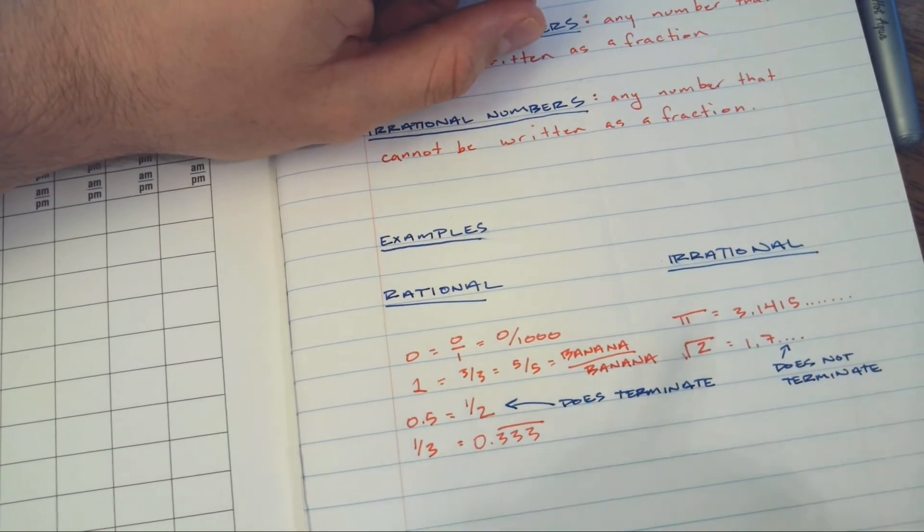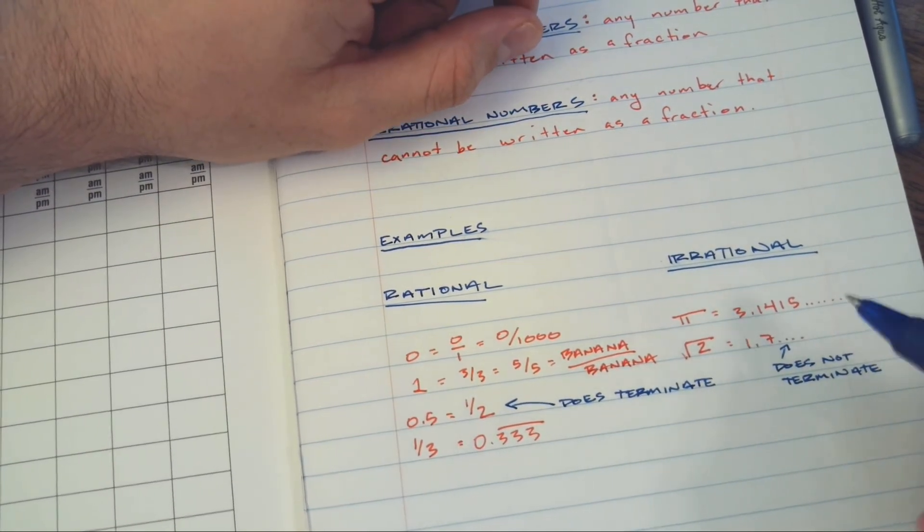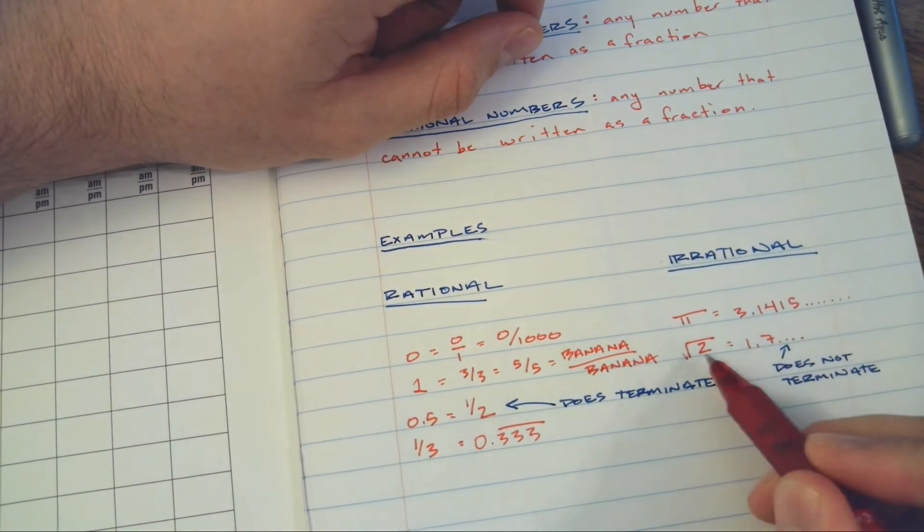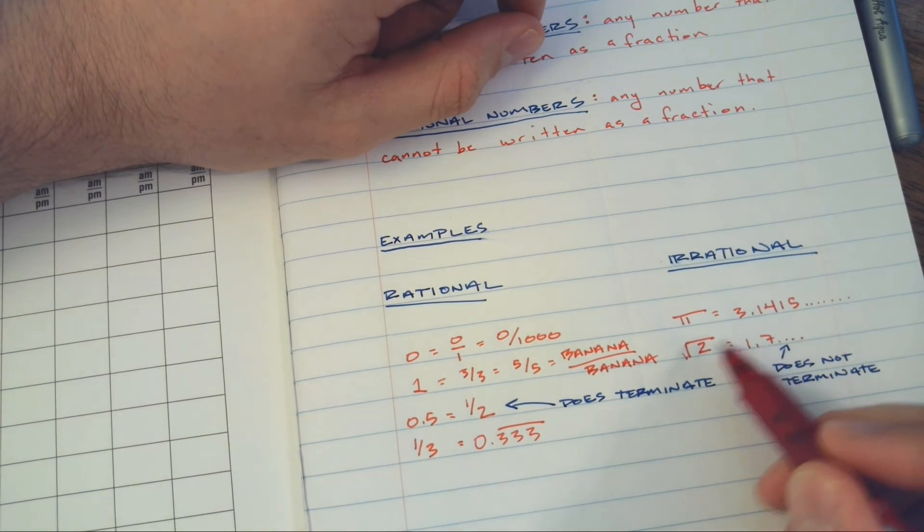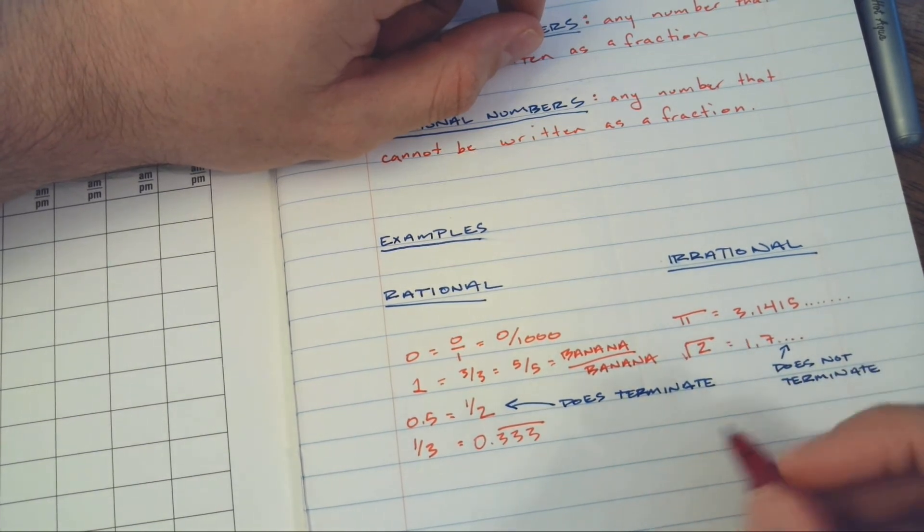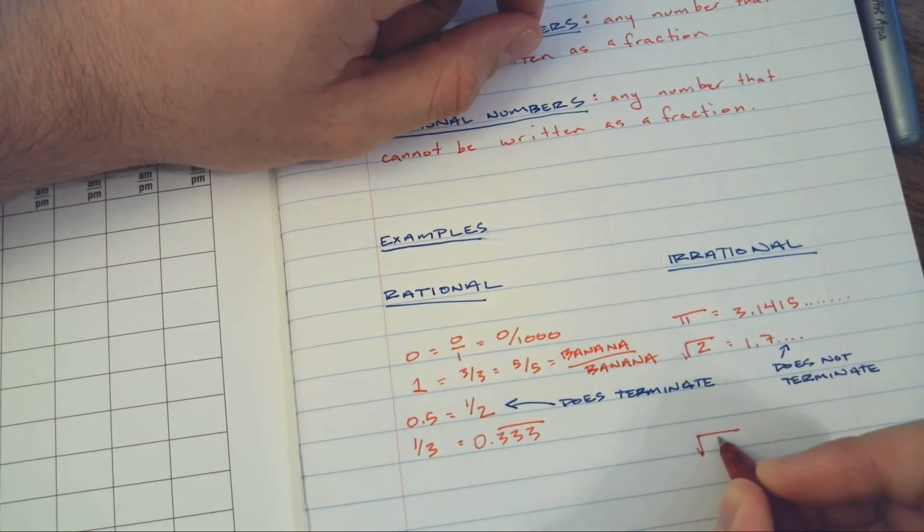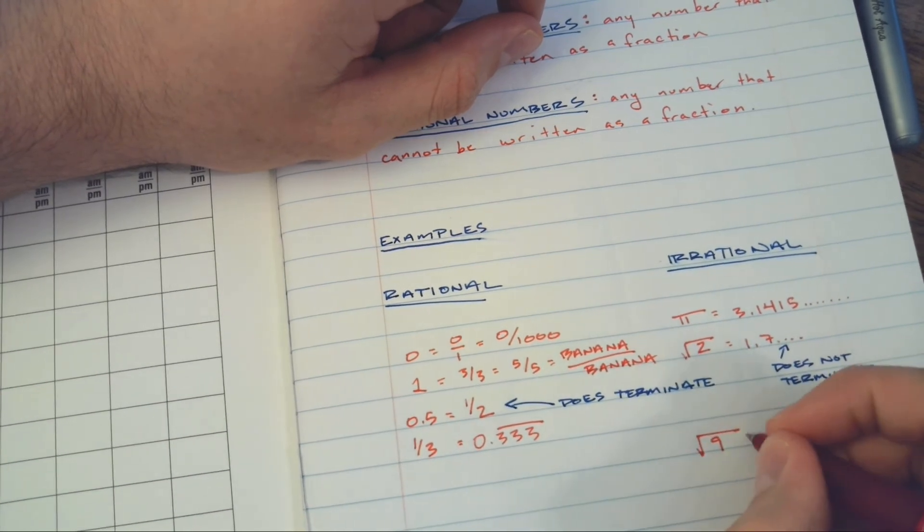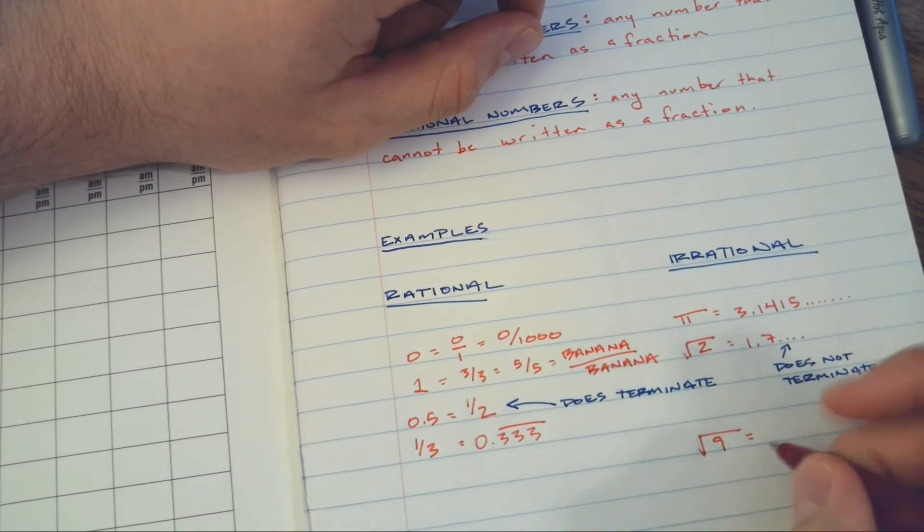Okay, so if it cannot be written as a fraction and does not terminate, definitely irrational. But we got to think here - not every square root is an irrational number. Let's think about the square root of nine.